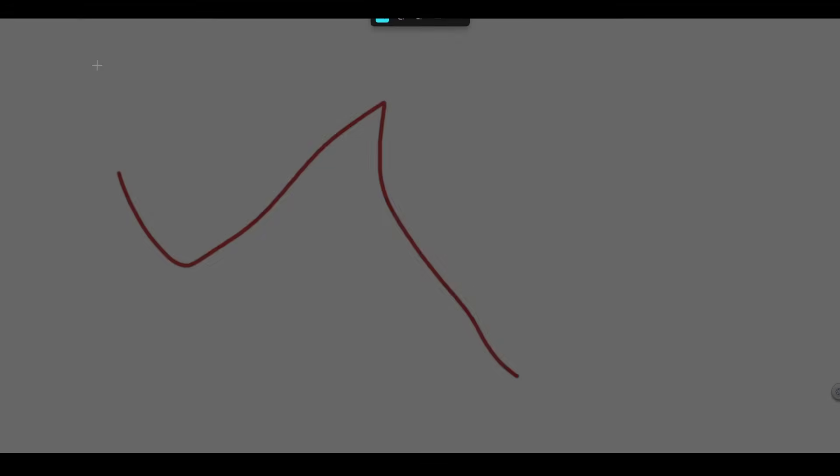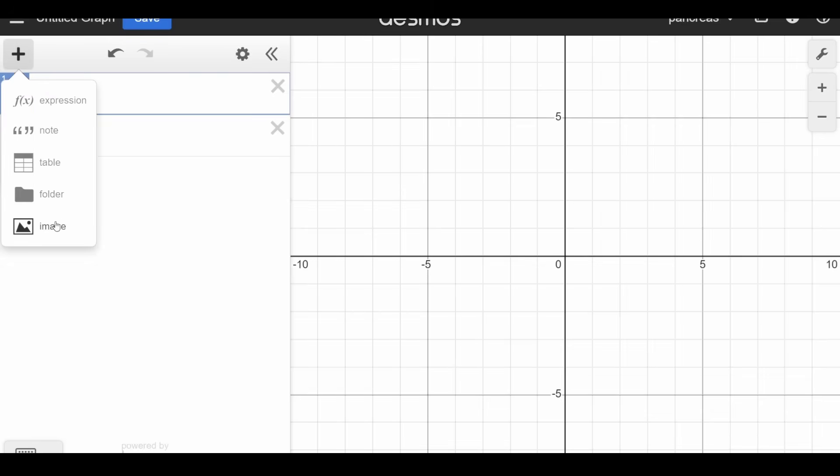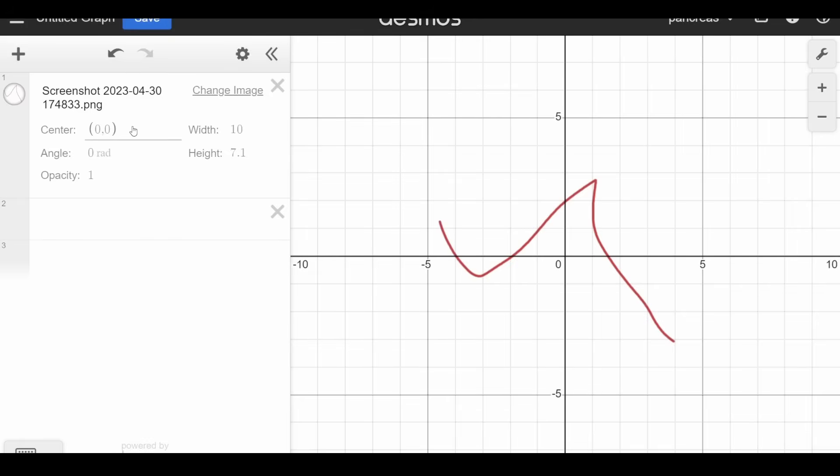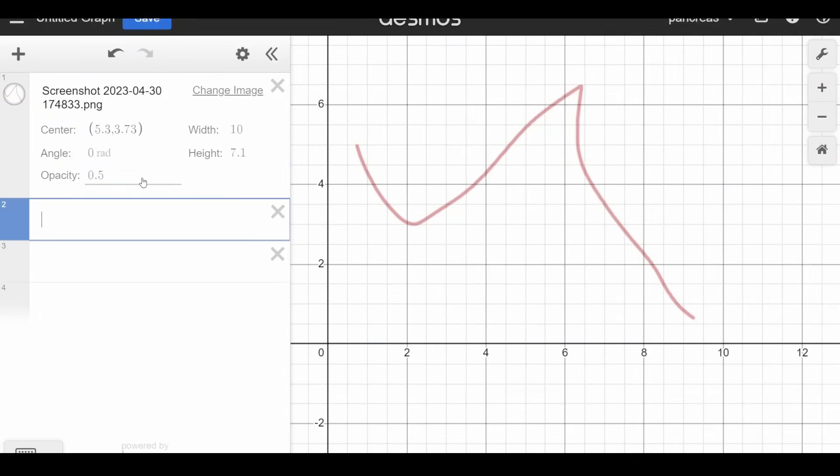Say that I wanted to draw this scribbled line out in Desmos. To get started, if we take a screenshot and download it, then we upload the picture to Desmos and move it to where I want it to be. Just to see our lines a bit better, we can turn down the opacity of this image.